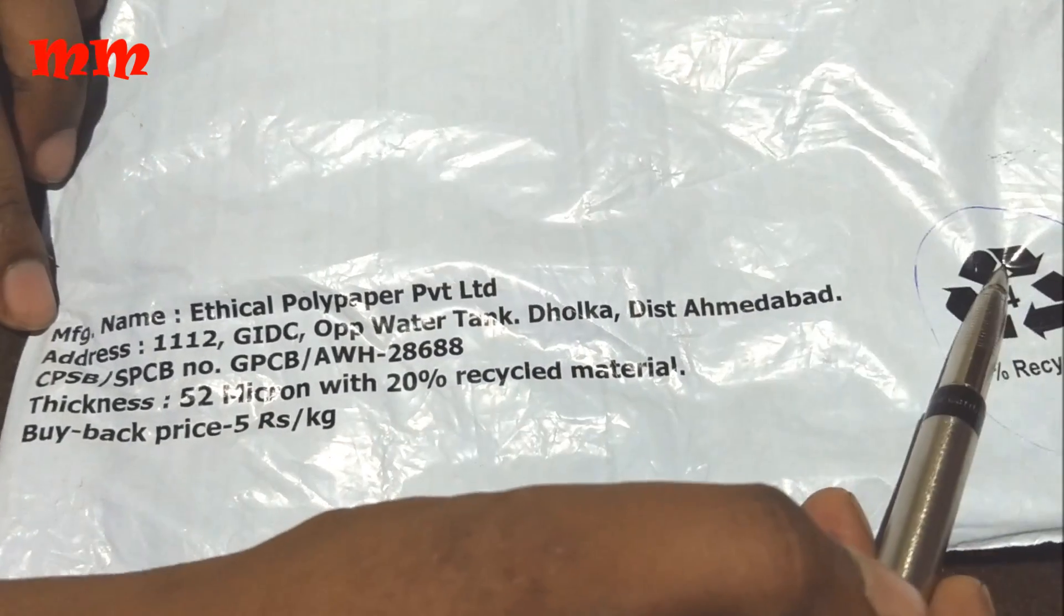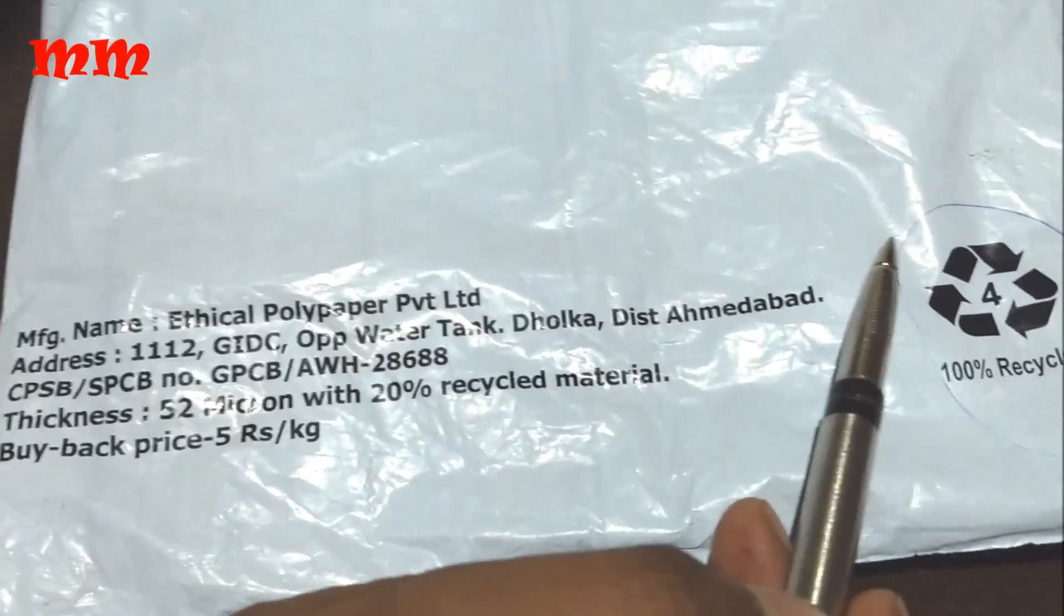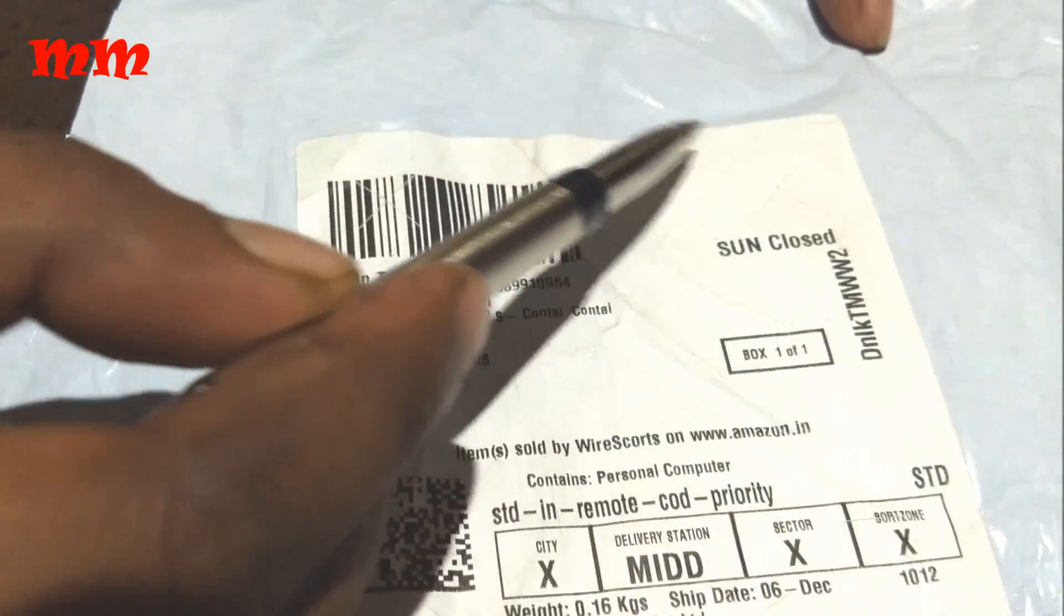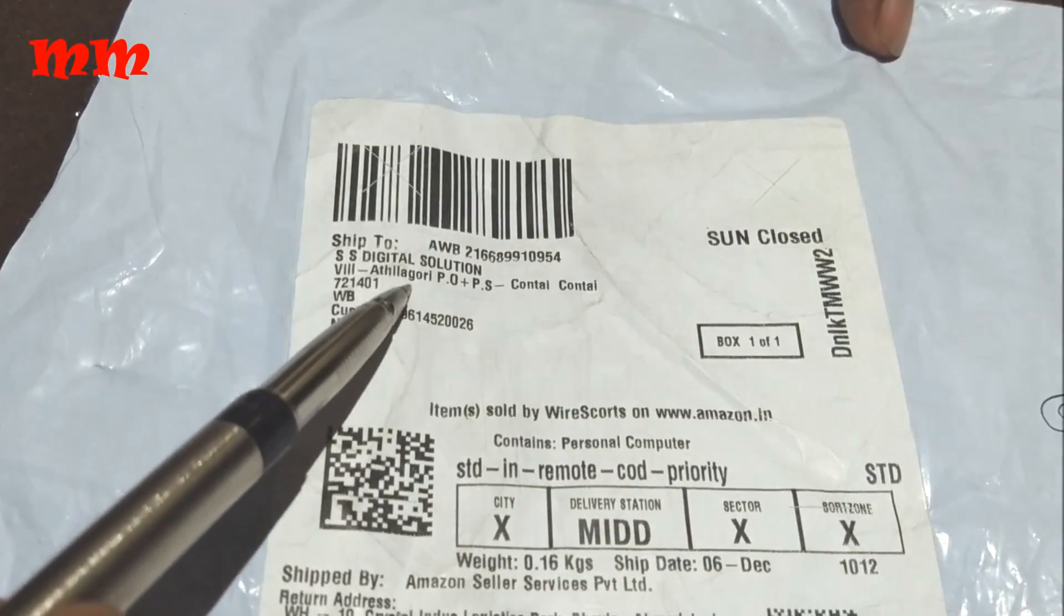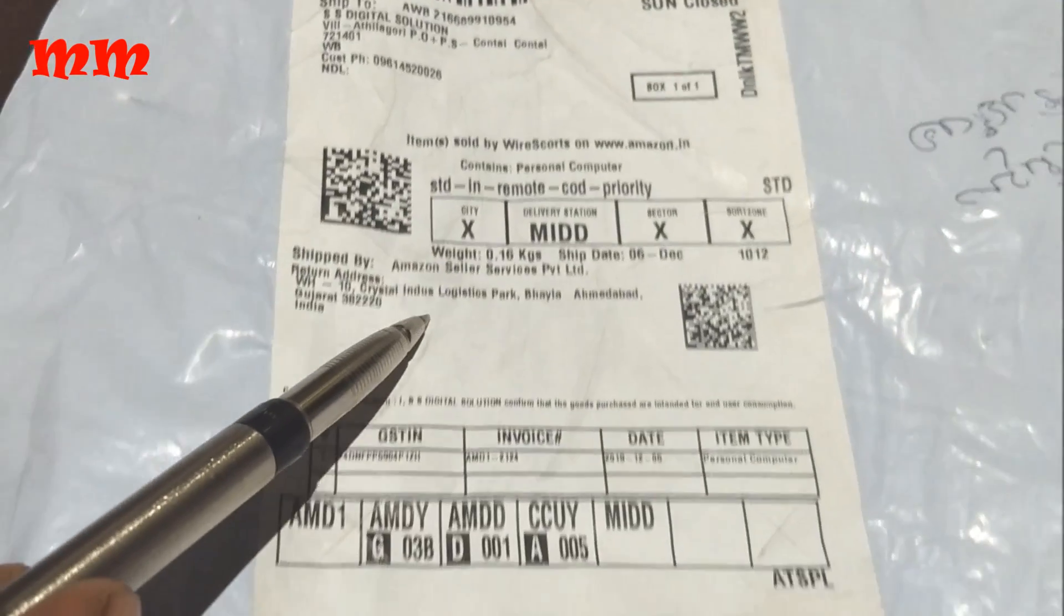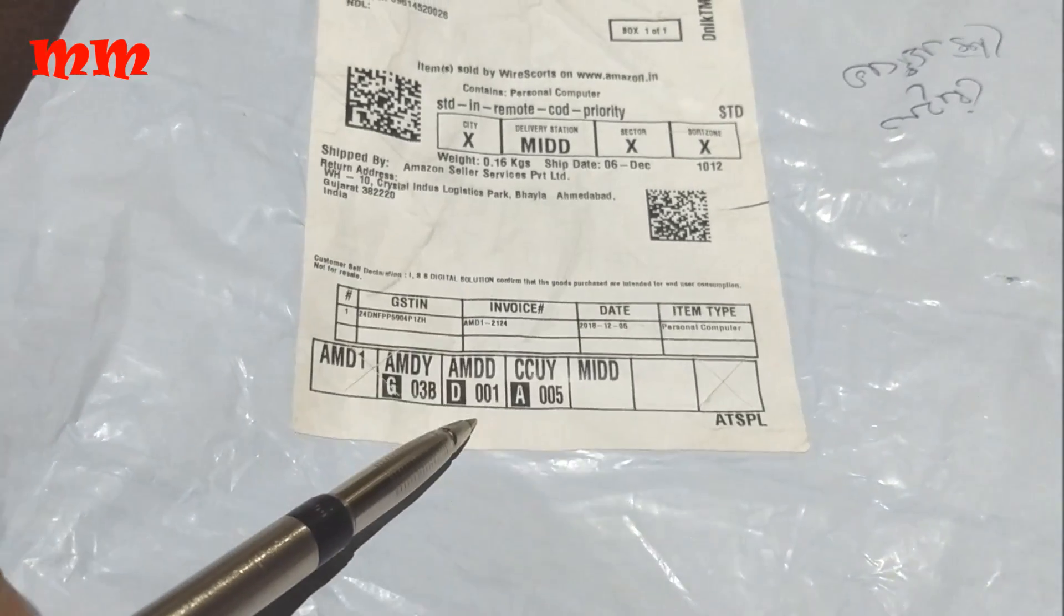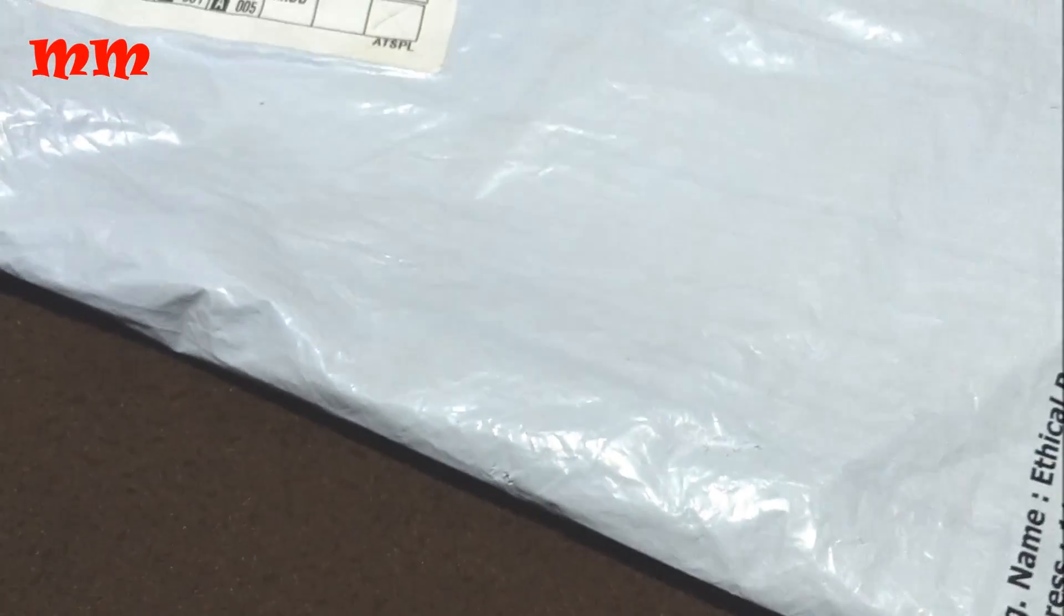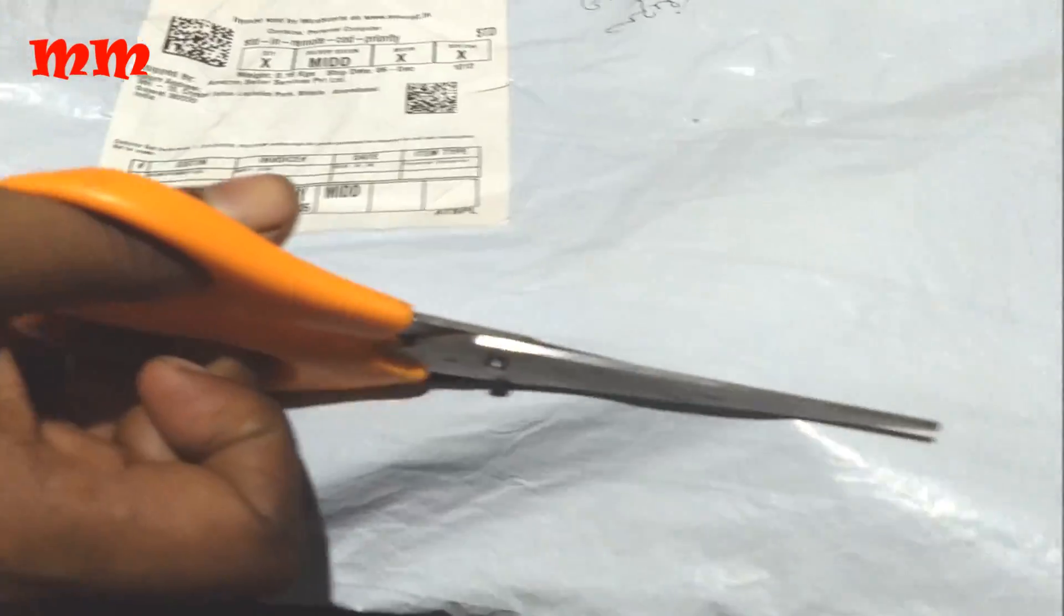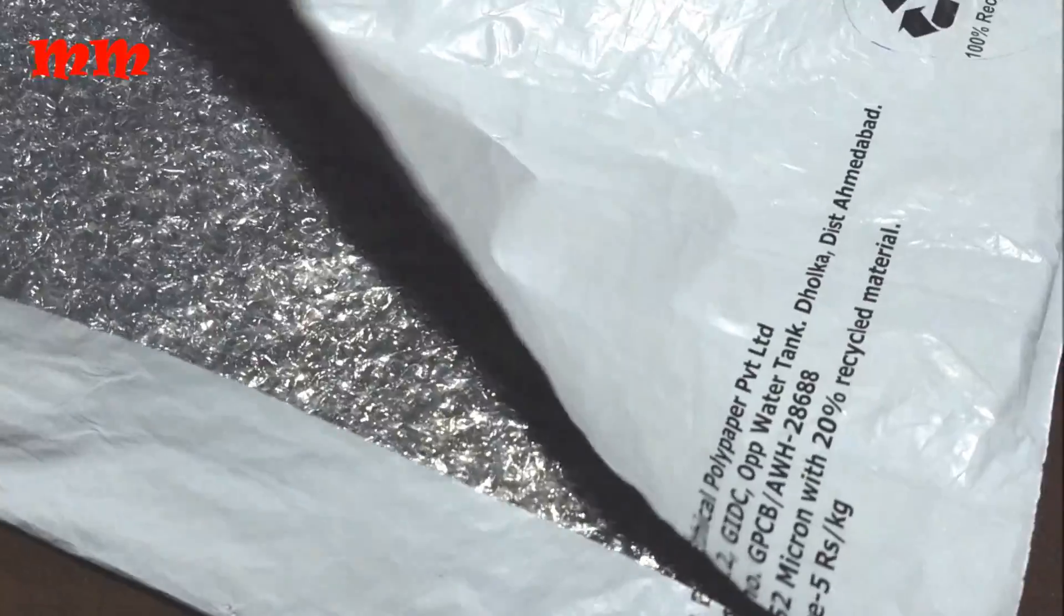The Ethical Polyethical Paper Private Limited - the company in which the paper was created. It is 100% recyclable material. The shipping address and all the details are here.